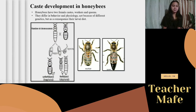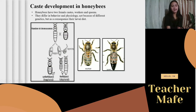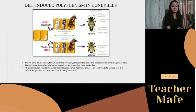When they mate, the queen bee stores the sperm in her spermatheca, which is located in her abdomen. The queen bee decides whether or not to introduce the sperm to her egg. If no sperm is introduced, the egg develops into an unfertilized, haploid egg. If the sperm is introduced, it develops into a fertilized, diploid egg with 32 chromosomes.